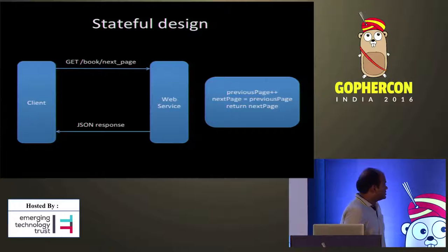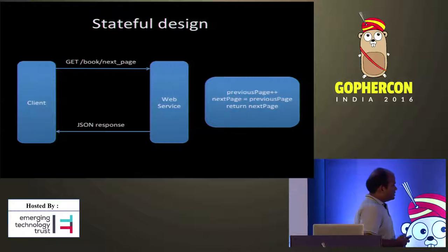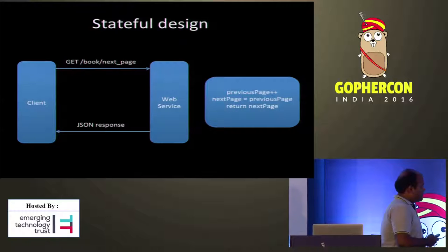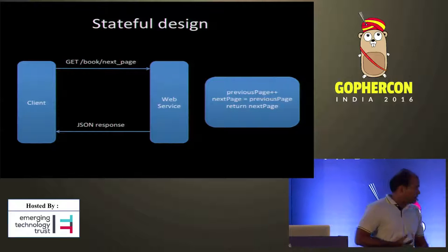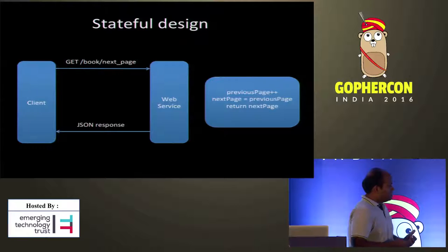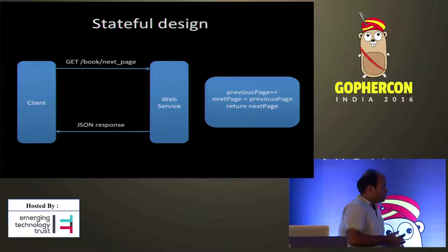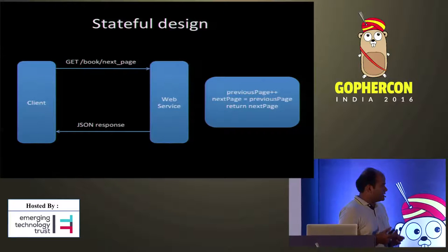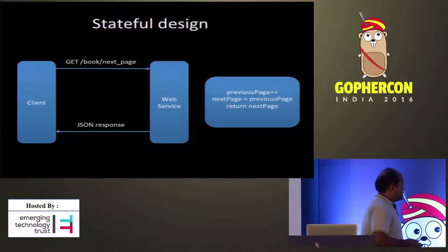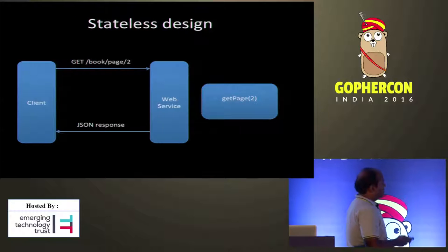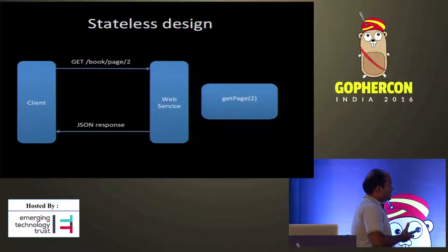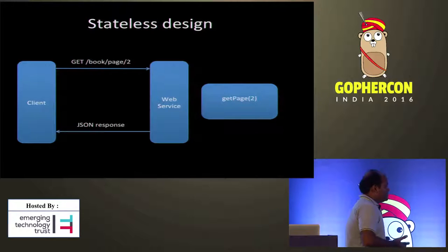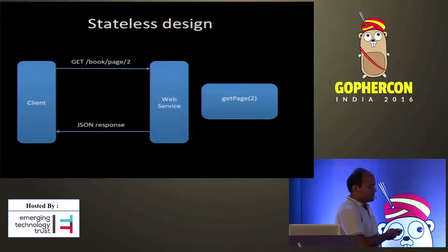What's the difference between stateful and stateless? Let's take a simple example: somebody wants to fetch a page from a book. There is a GET request. In the stateful case, the web service maintains a page counter, increments the page, and returns the next page — the server has to remember which client wanted which page. In the stateless case, the request is explicit: book/page/2. Just give me page 2. There is no question of maintaining state — the request is explicit itself.